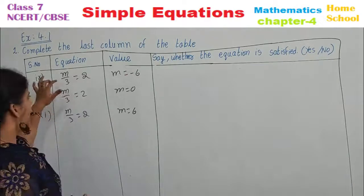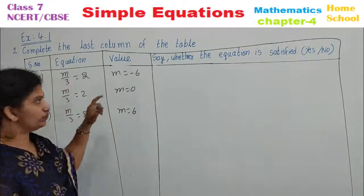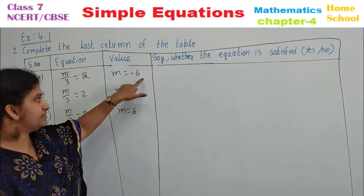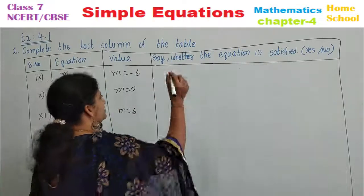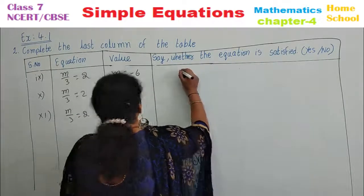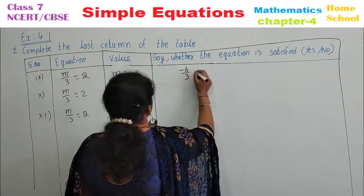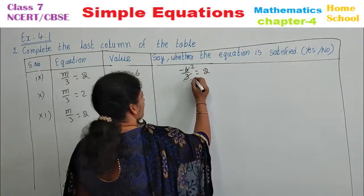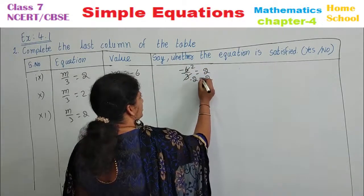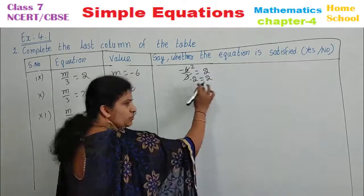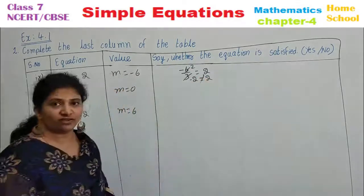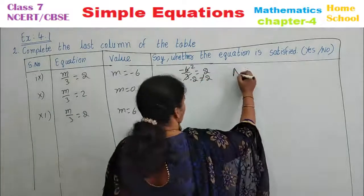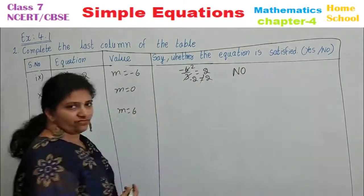Ninth problem: m divided by 3 equals 2, with m equal to minus 6. Substitute: minus 6 divided by 3 equals minus 2, and minus 2 is not equal to 2 — they differ in sign. Write no; it is not satisfied.